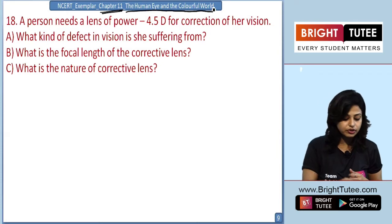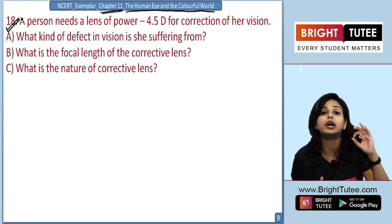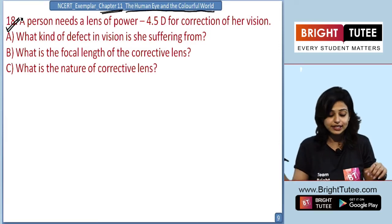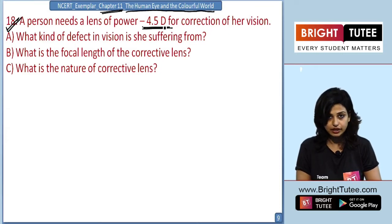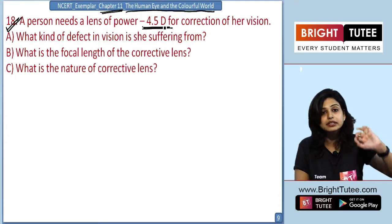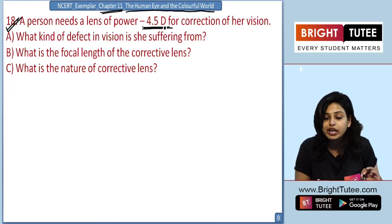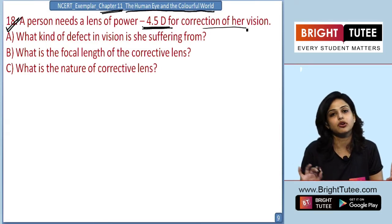One of the tricky questions from the exemplar is question number 18. The question reads: a person needs a lens of power minus 4.5 diopters. This is one of your keywords. A person is having a defect and the power of the corrective lens is minus 4.5 D for the correction of her vision.